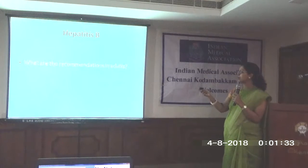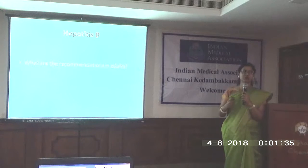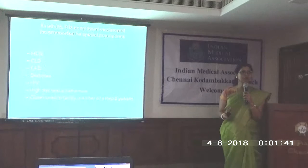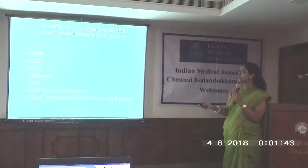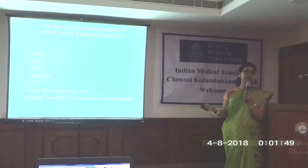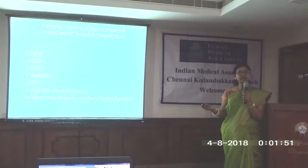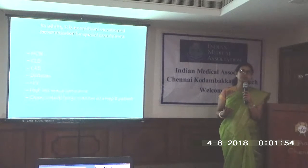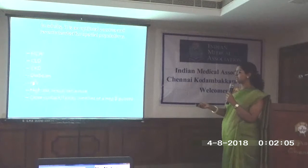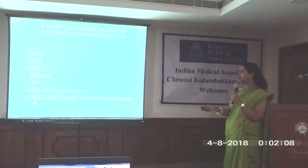Should we vaccinate all adults with hepatitis B? The recommendations are: healthcare workers — yes, definitely. Chronic liver disease patients, CKD patients, and patients on dialysis — yes, due to risk of cross-transmission of hepatitis B. The schedule is 0, 1, 2, and 6 months, with double the normal dose for CKD patients — 40 mcg instead of the standard 24 mcg. HIV-positive patients, those with high-risk sexual behavior, and close family contacts of hepatitis B-positive individuals are also indicated.